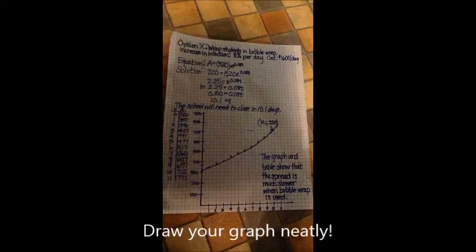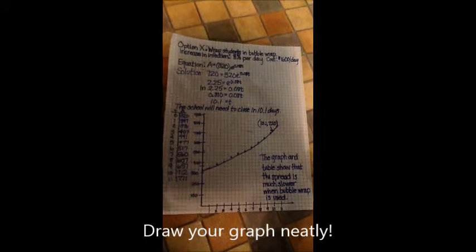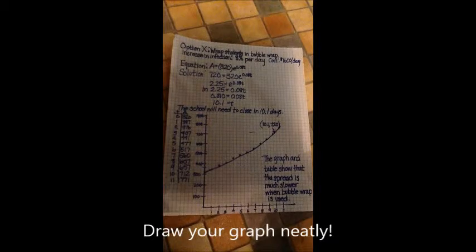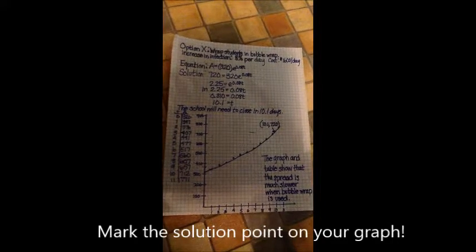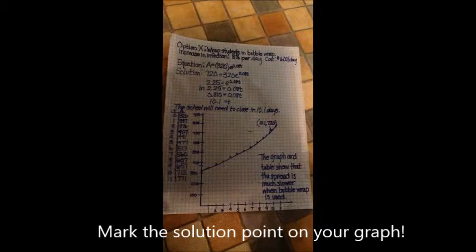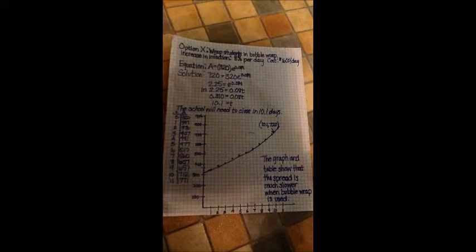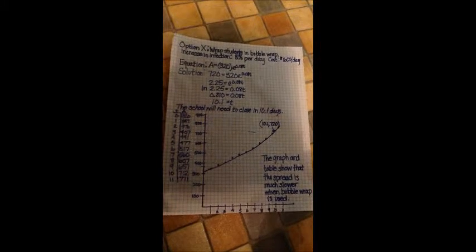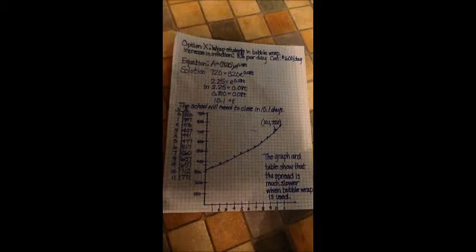A table and a graph are both shown. Points are estimated for the graph, but a smooth curve is drawn through them. The solution point of 10.1, 720 is clearly marked, along with the note stating the graph and table show that the spread is much slower when bubble wrap is used.